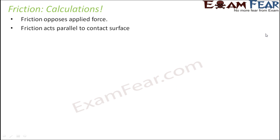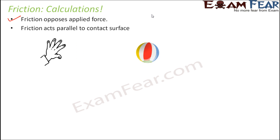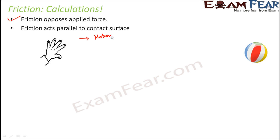Friction always opposes applied force. So whenever we say that friction is always trying to oppose motion, let's take an example. The direction of motion is this — the ball is moving in this direction. The direction of applied force is this; we are applying a push in this direction. Friction is acting in the opposite direction. So friction is always opposite to applied force.